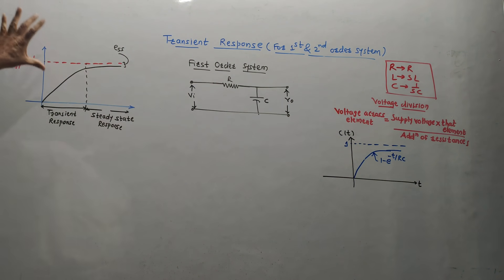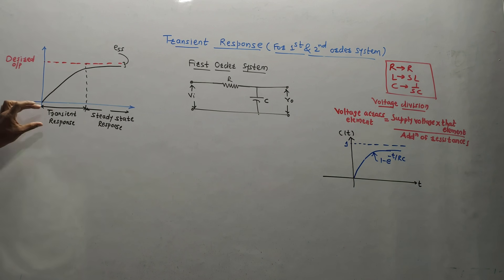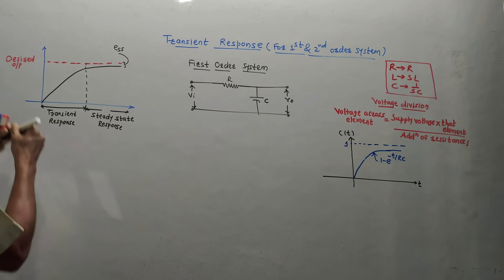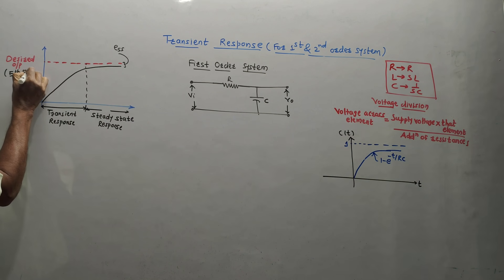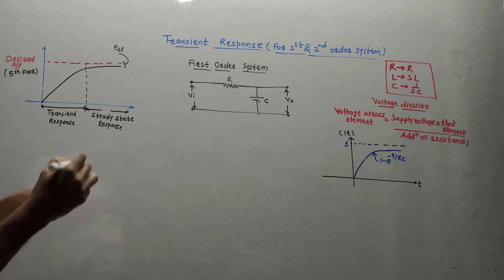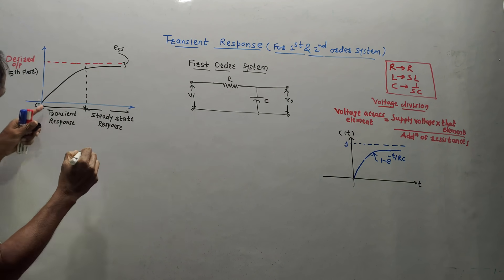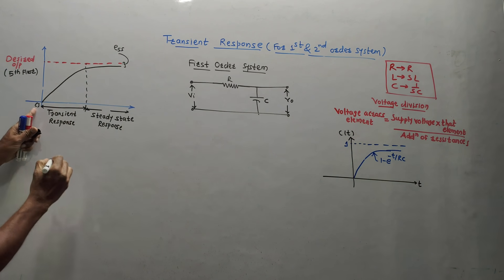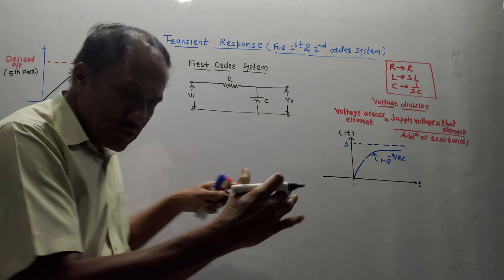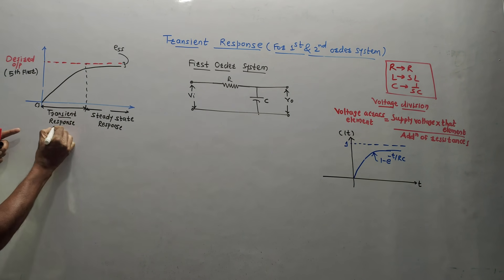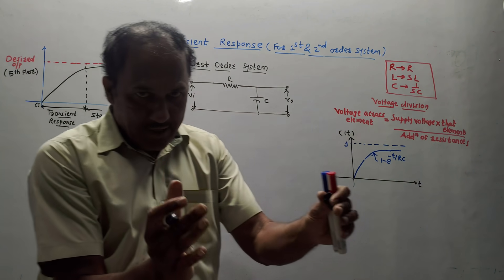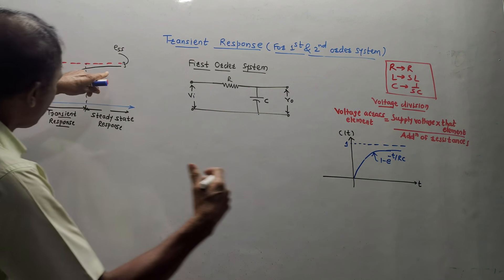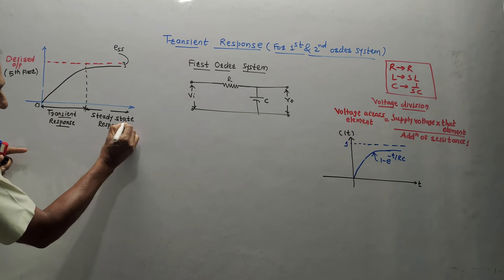Before starting this analysis, let me brush up what is the meaning of transient response. Consider a simple example: you are carrying a lift to the fifth floor. The desired output is the fifth floor. On the y-axis I mark floor, on the x-axis I mark time. The lift motion starts from the ground floor exponentially. The time period before the fifth floor is reached is called the transient response — when the system is still changing. Once the lift stops at the fifth floor, that particular response is called steady state response.